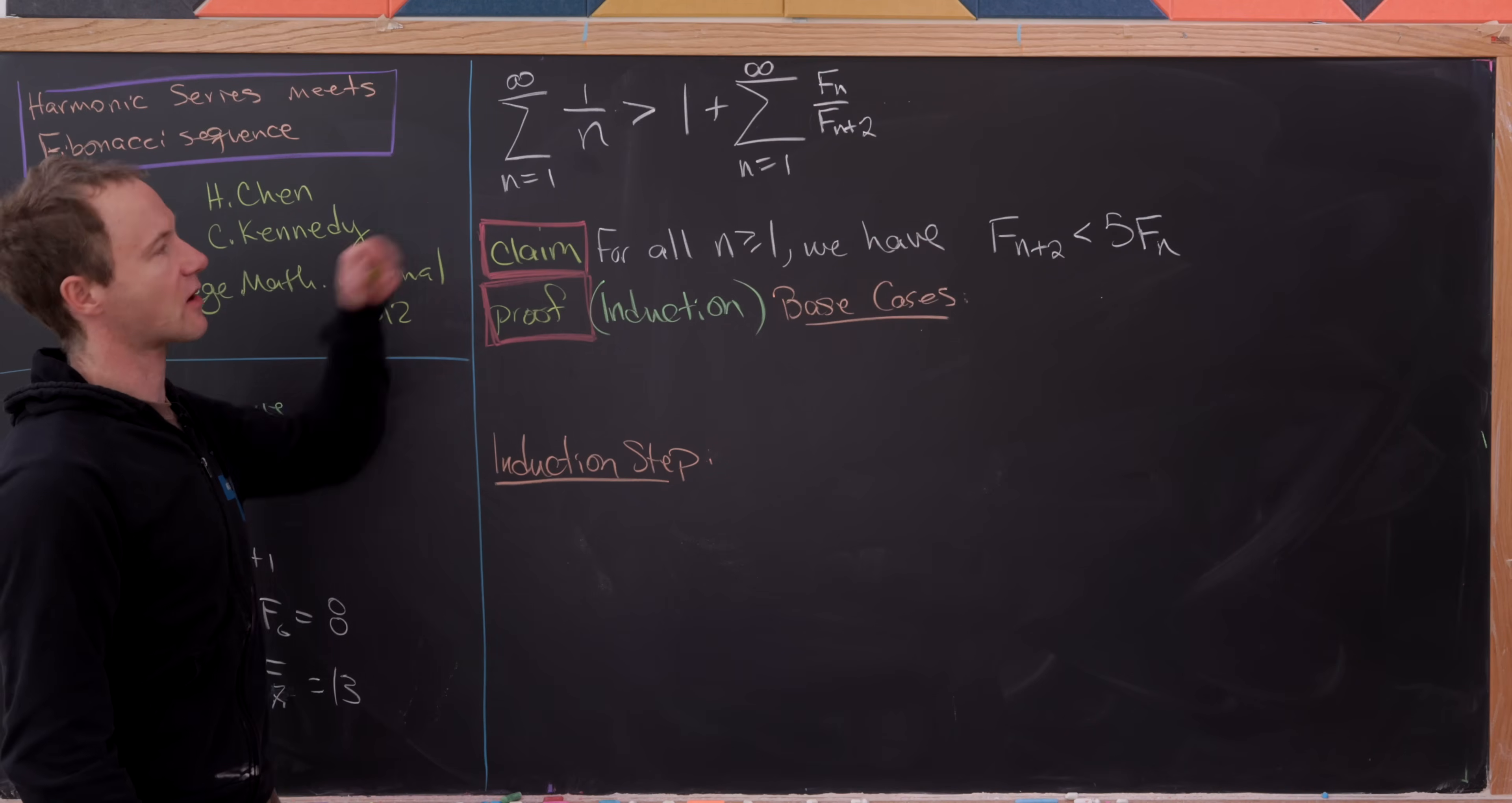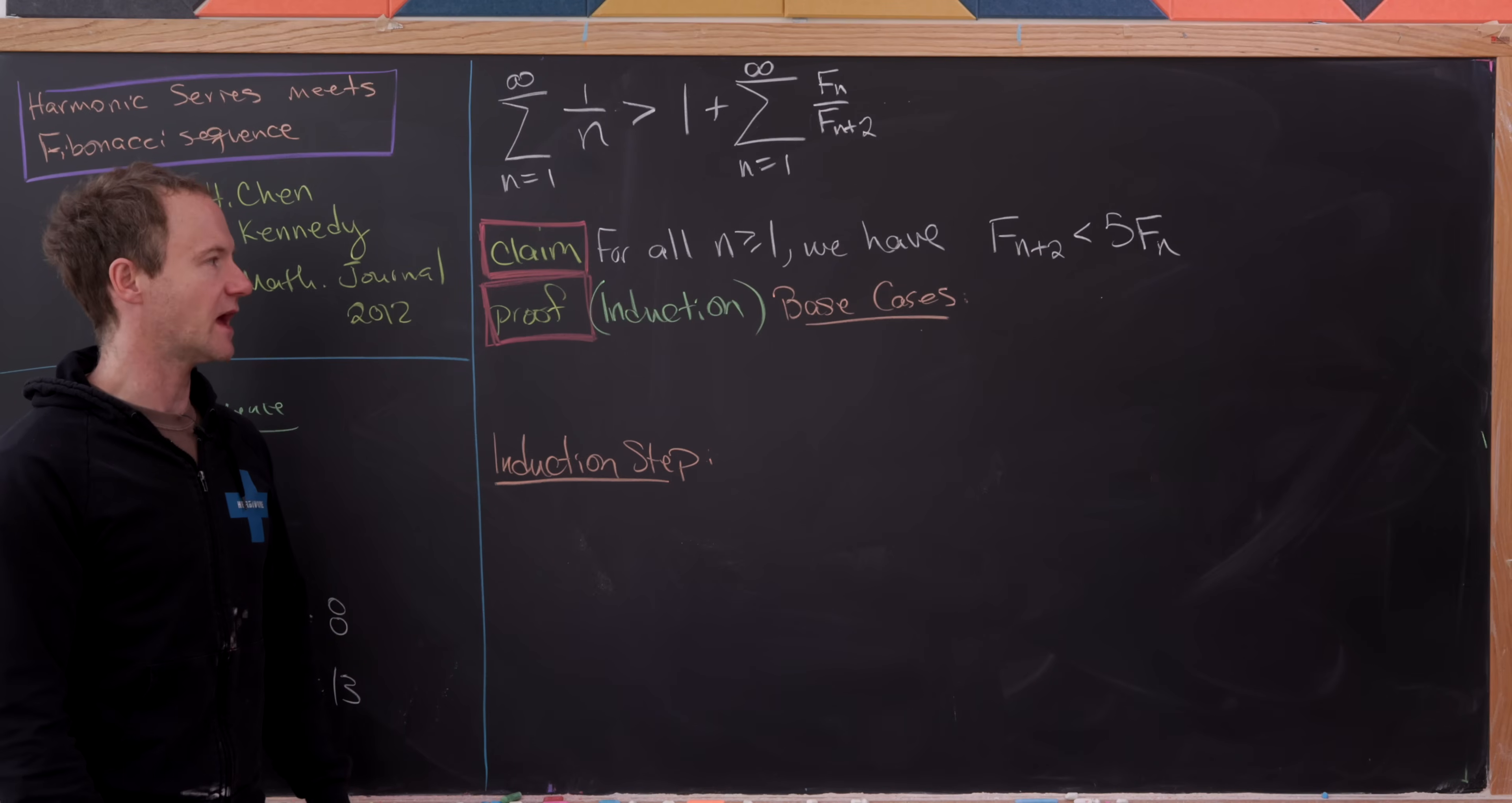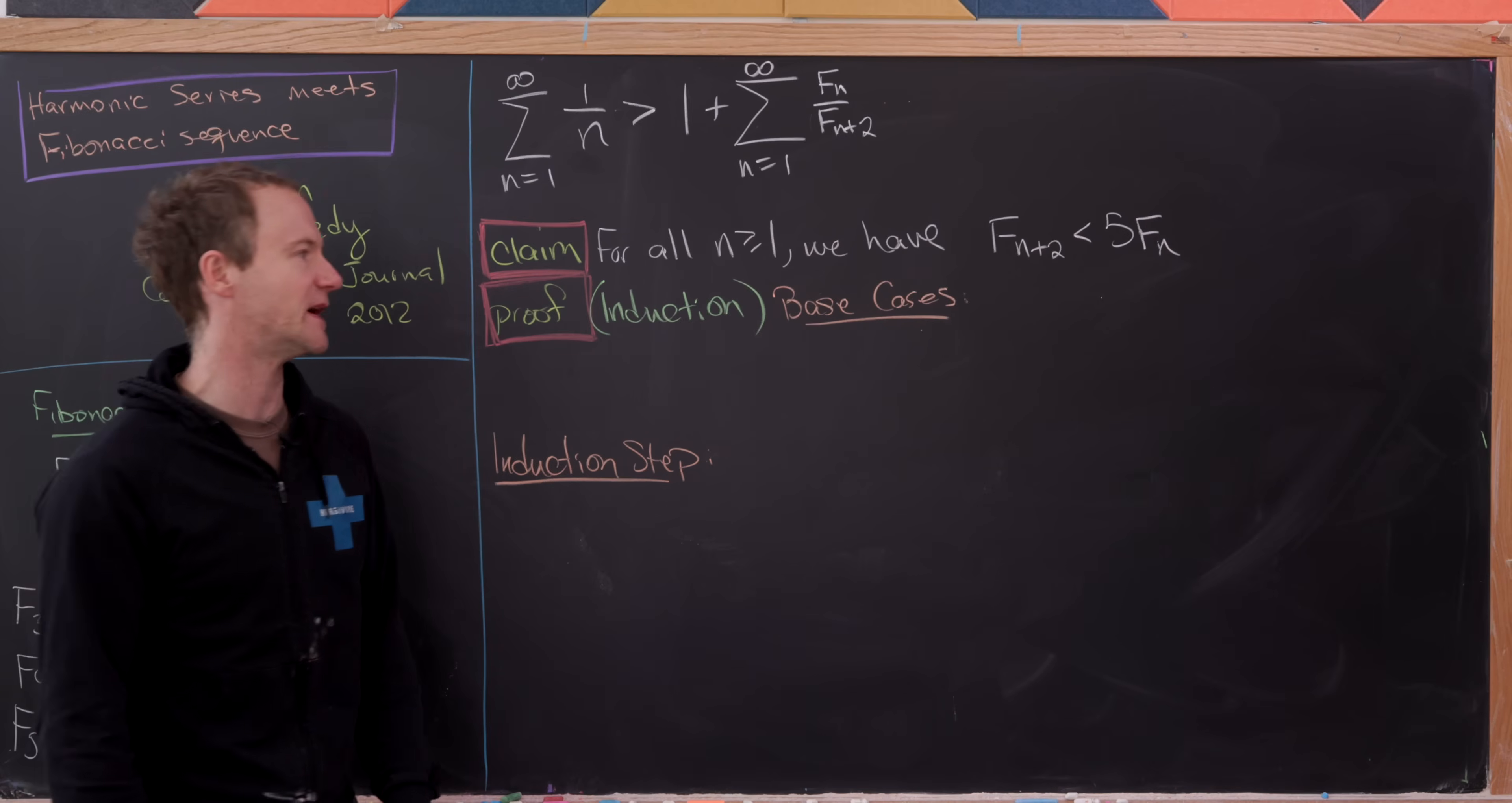So we just finished showing that our harmonic series was bigger than this series which starts with 1 and then we have this sum of these quotients or ratios of Fibonacci numbers. And now we want to show that this companion series diverges. And we'll do that via the following claim. And this is not a very tight inequality, but it will get the job done. So we'll prove that for all n bigger than or equal to 1, F_n plus 2 is less than 5 times F_n. And here we're going to do it with induction. And as you'll see, we'll need two base cases.